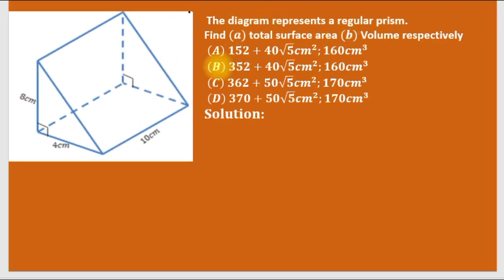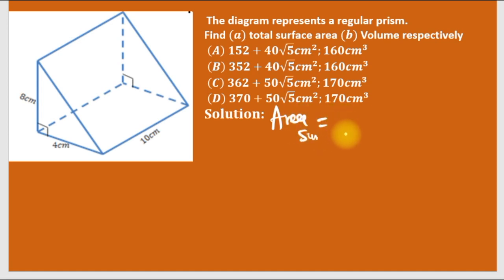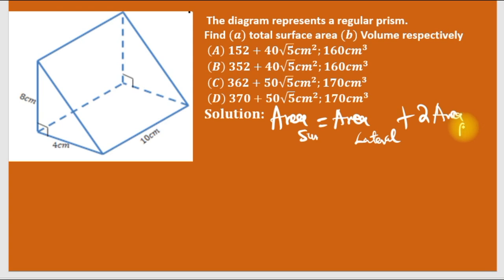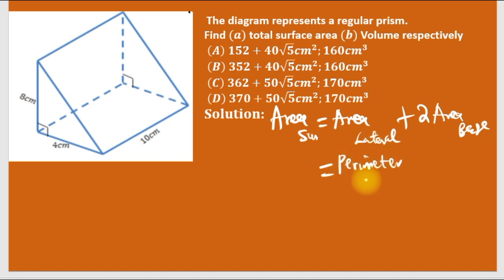The diagram represents a regular prism. We are asked to find the total surface area and the volume. The total surface area of a prism is always lateral area plus two times the area of the base, because a prism has two identical bases. The remaining part is the lateral area, and the lateral area is always perimeter times height.